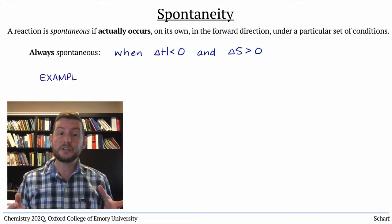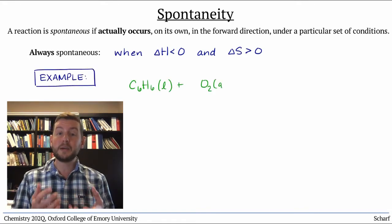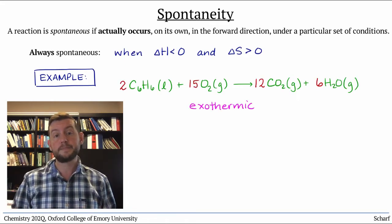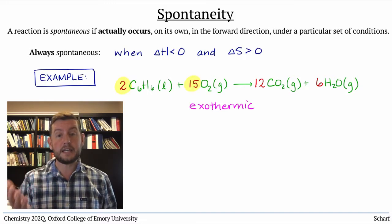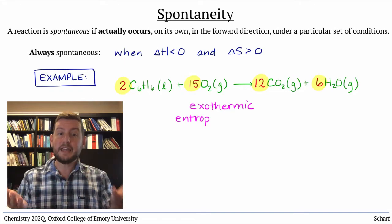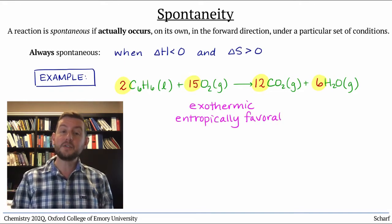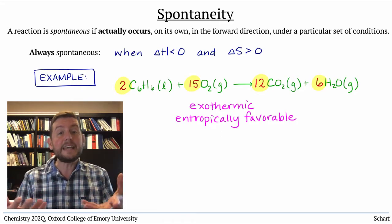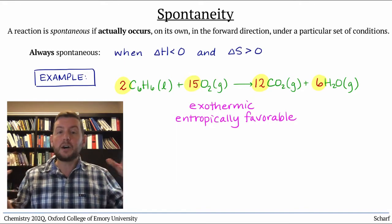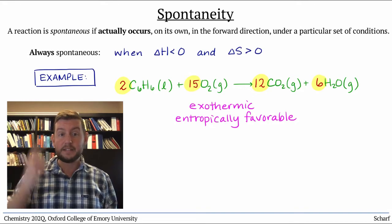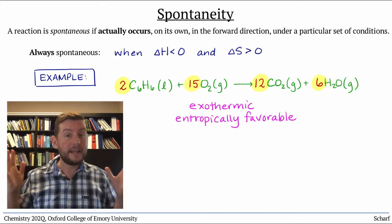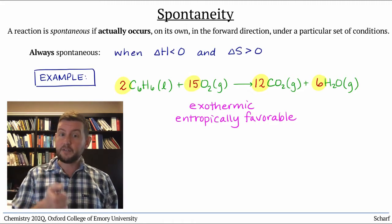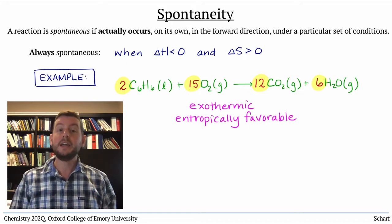Combustion reactions are a great example of this. The combustion of liquid benzene, for instance, is exothermic, so enthalpically favorable. And since it takes 17 reactant molecules and makes 18 product molecules, it is entropically favorable as well. Of course, even though this reaction is spontaneous, it doesn't happen automatically on its own — there are gallons of liquid benzene in the lab that are not spontaneously combusting. But if you provide a small spark to initiate the reaction, it will most certainly proceed.